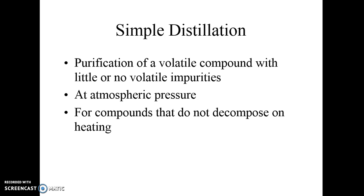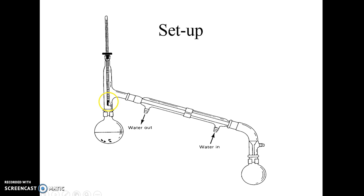Simple distillation is where you take a compound, boil it, and then collect it at a cooler temperature where it drips over. You've used this setup where you boil here — notice where your thermometer is quite low so it will get hot in the vapors — and then the vapors flow over and condense in the condenser and drip out.